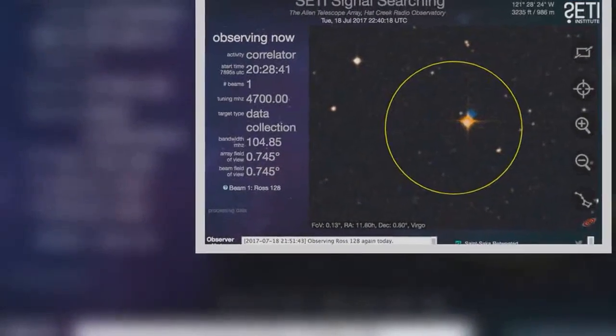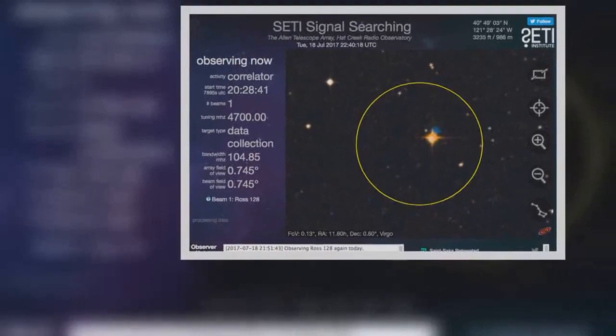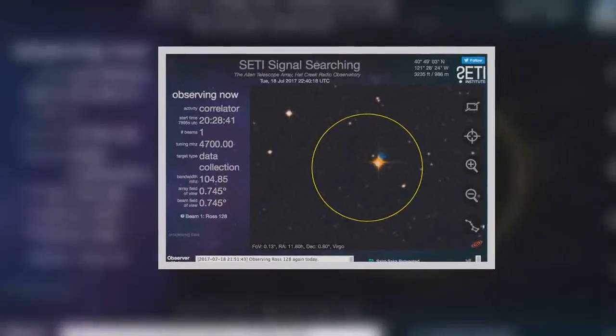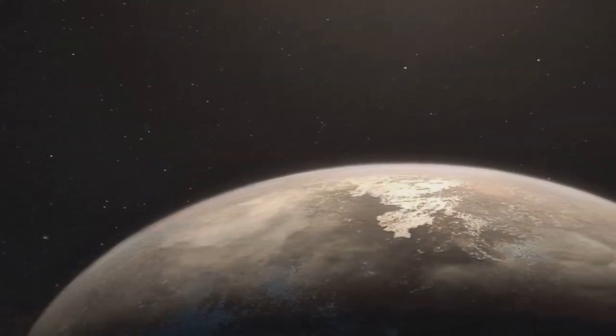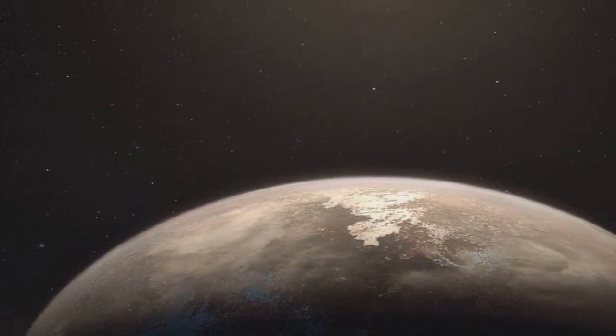But we still need to know what the atmosphere of Ross 128b is like. Depending on its composition and the reflectivity of its clouds, the exoplanet may be life-friendly with liquid water like Earth, or sterile like Venus.